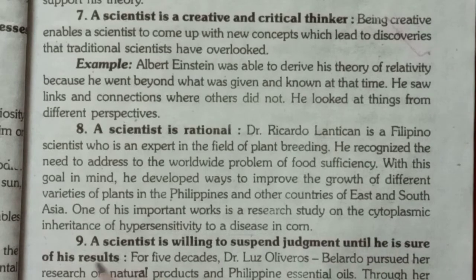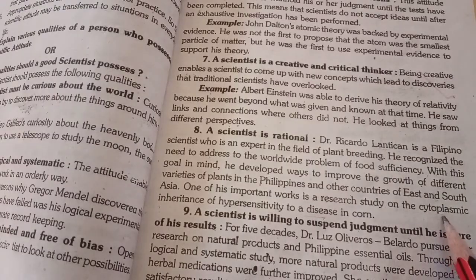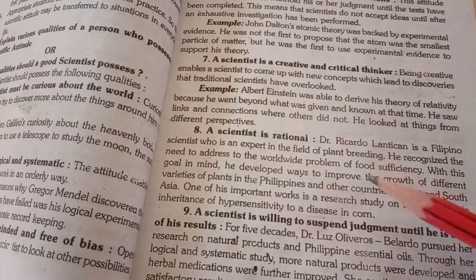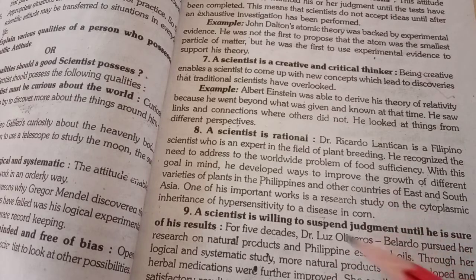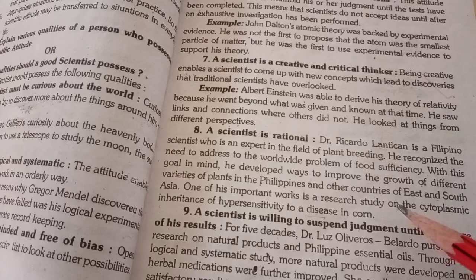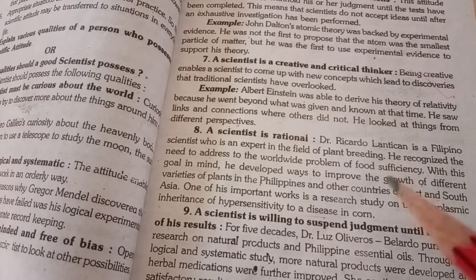One of his important works is a research study on the cytoplasmic inheritance of hypersensitivity to a disease in corn. Cytoplasmic inheritance is the inheritance of organelle DNA from the parents. It differs from nuclear genetics because it does not follow the laws of gene inheritance, which state that half of the genes come from each parent. It commonly occurs in cytoplasmic organelles such as the mitochondria and chloroplasts, or from cellular parasites like viruses or bacteria.